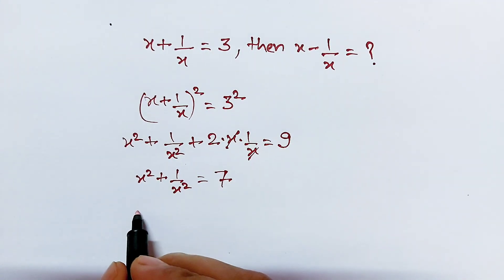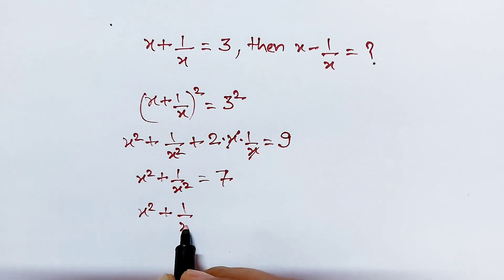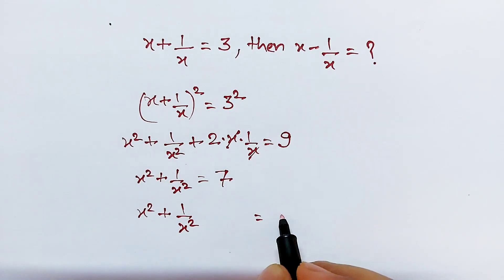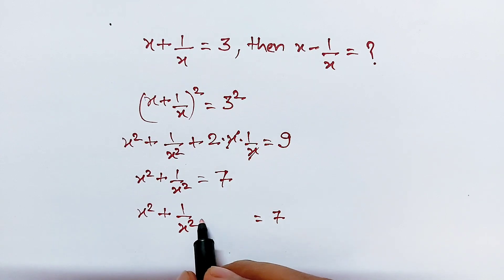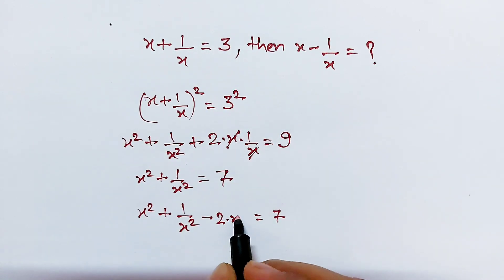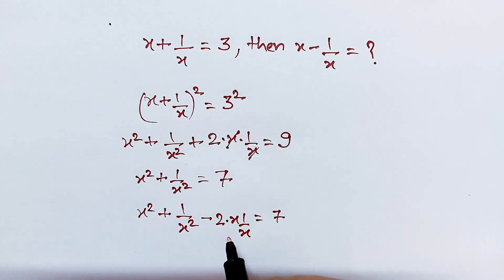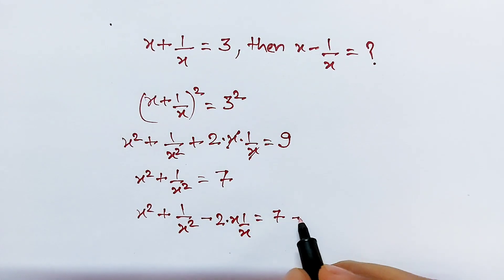Further solving this: x square plus 1 over x square equals 7. Now if I subtract minus 2 times x times 1 over x on both sides, what do I get?